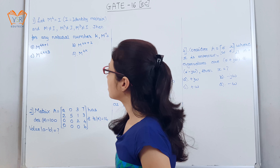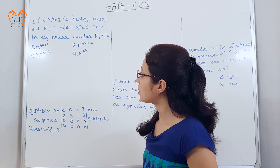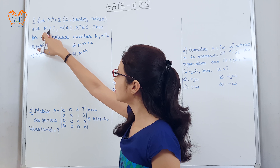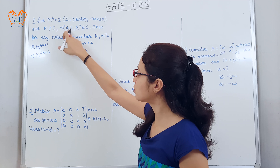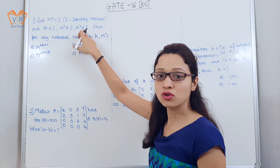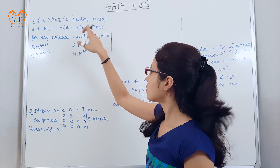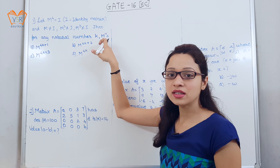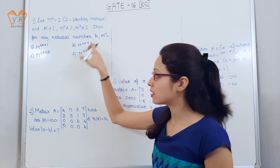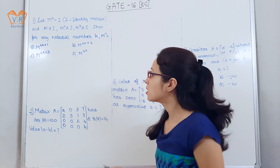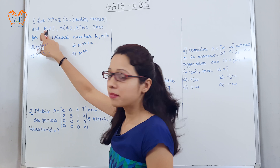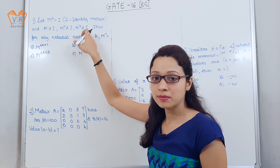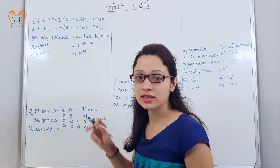The first example is: let m⁴ = I, where I is the identity matrix, and they have given m ≠ I, m² ≠ I, m³ ≠ I. Then for any natural number k, they are asking the value of m inverse and have given 4 options.